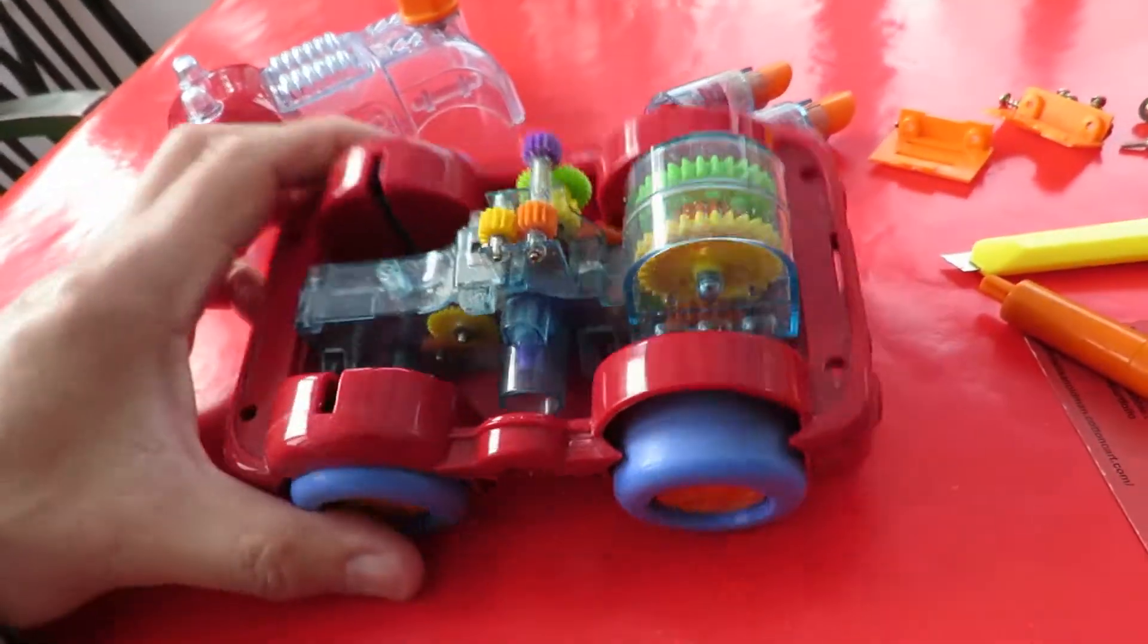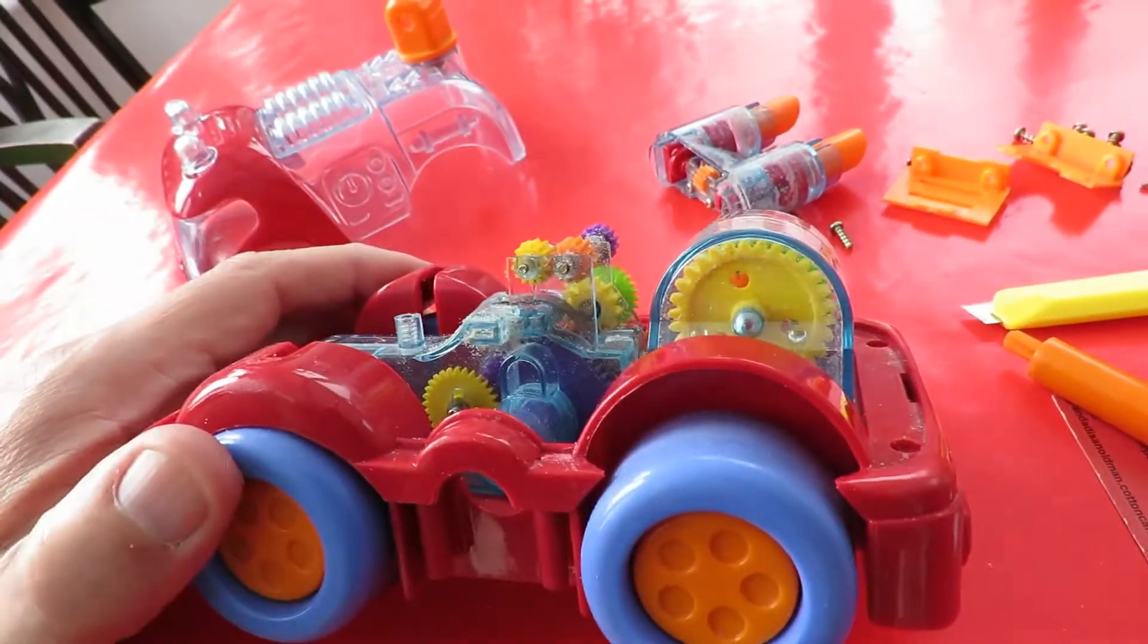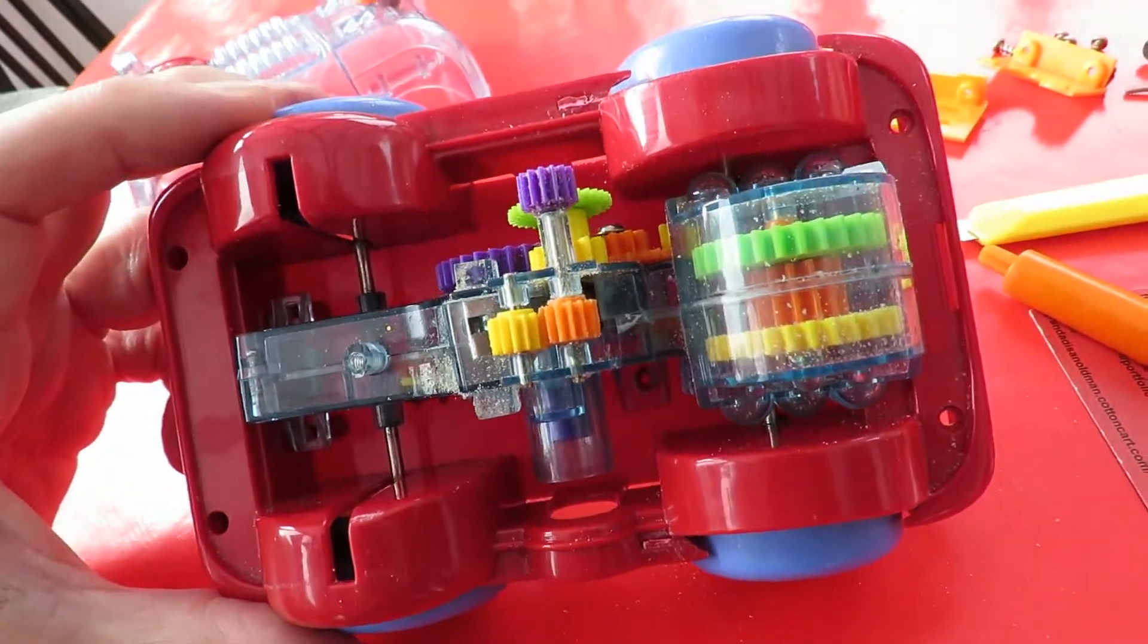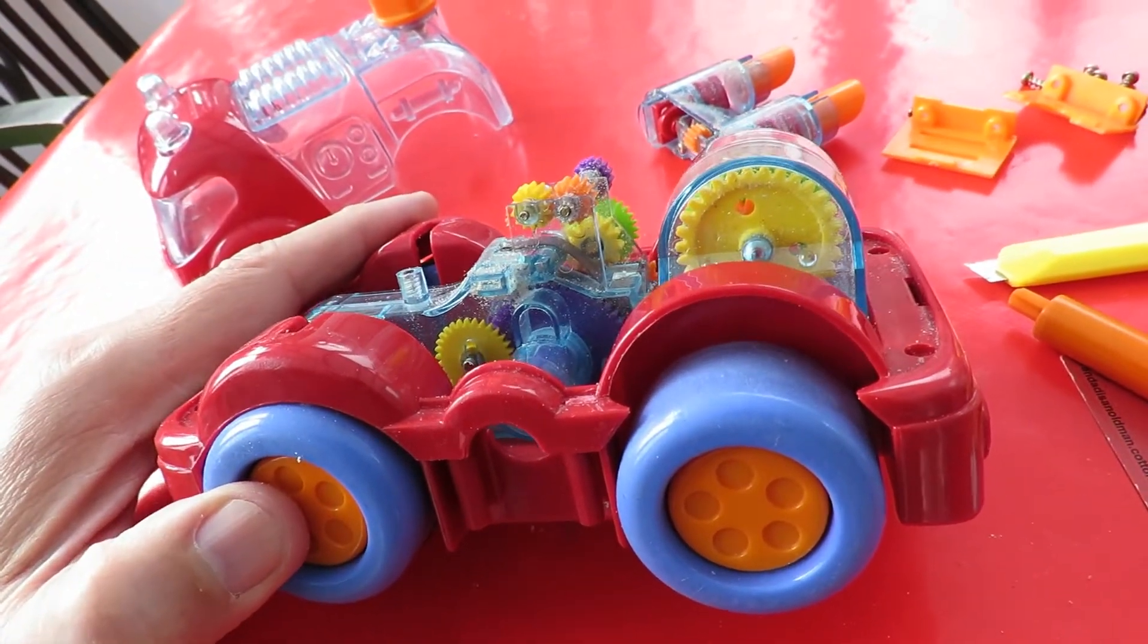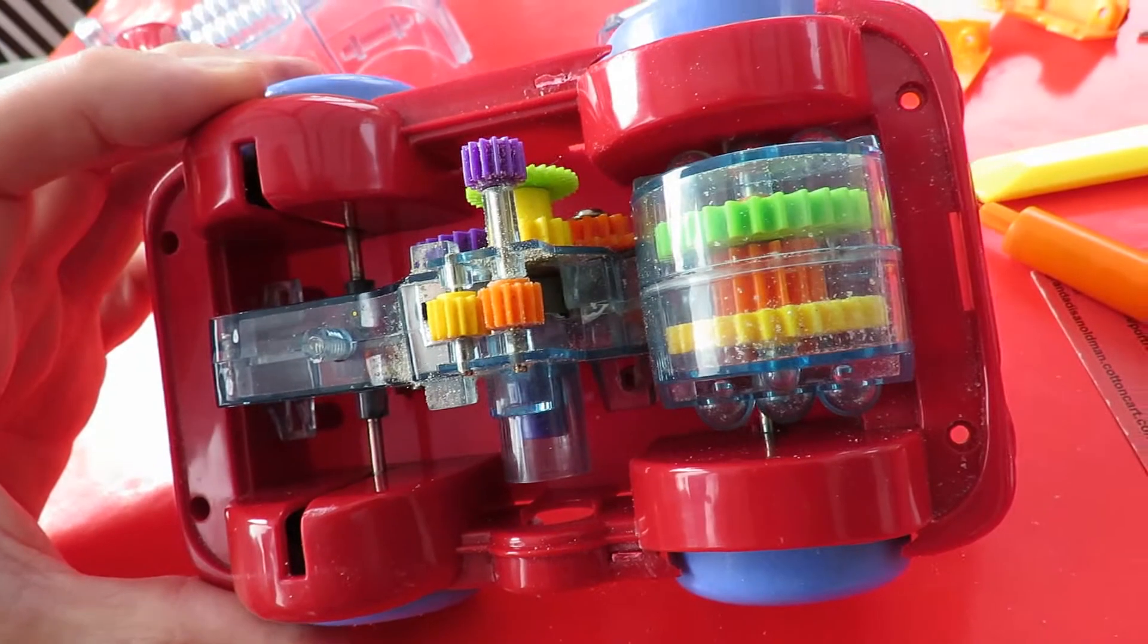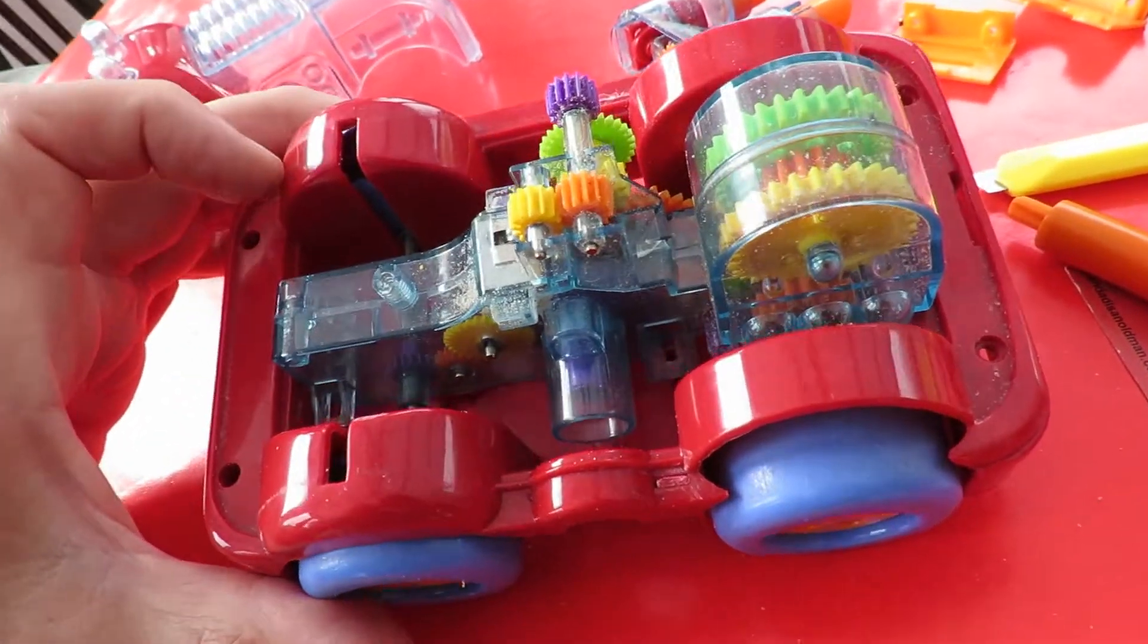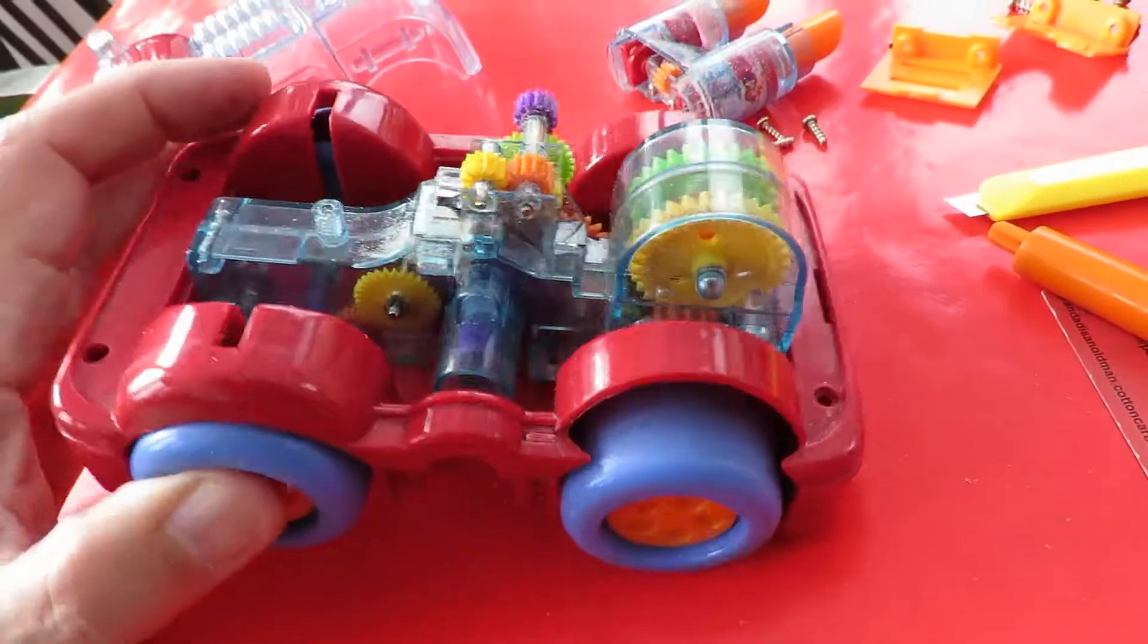Before I destroy it by trying to get the wheels off, I'm just wondering whether the reason it's not working is because of all the sand in it. It's quite possible that there's sand right in there jamming the gears. But either way, I'm still not going to be able to work on it without getting the wheels off. Which is a bit of a shame.